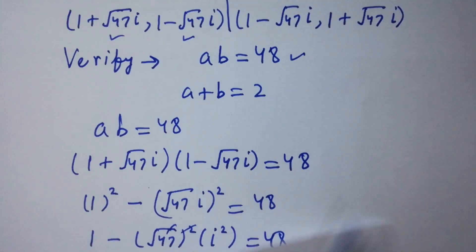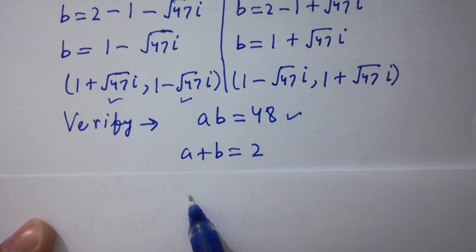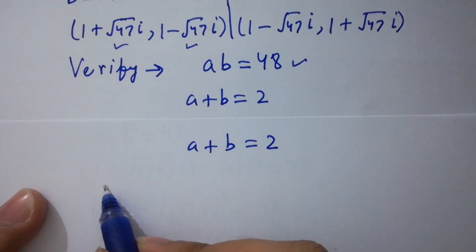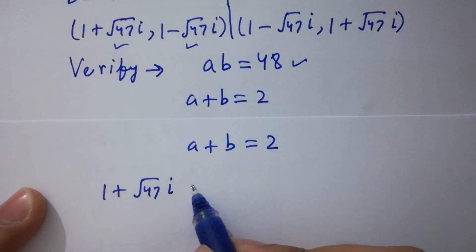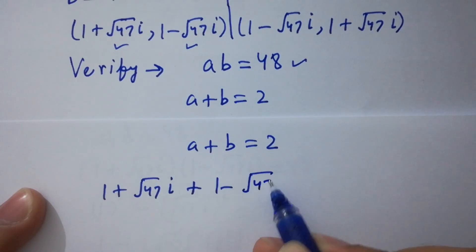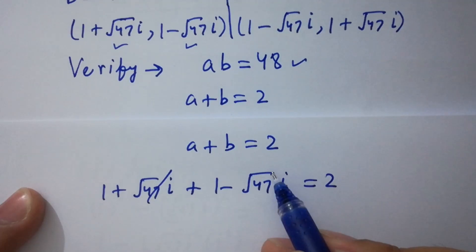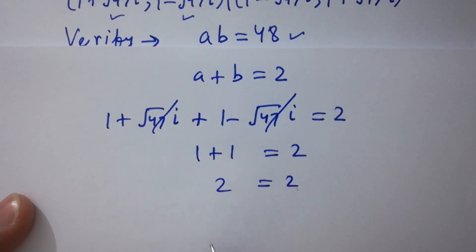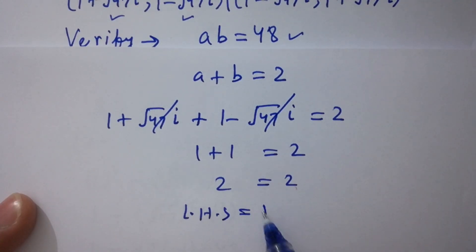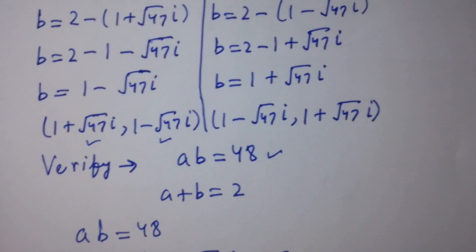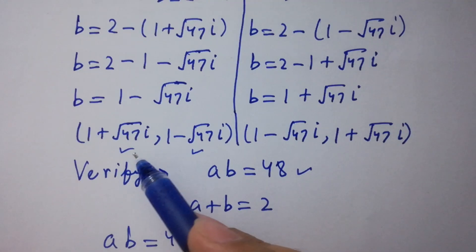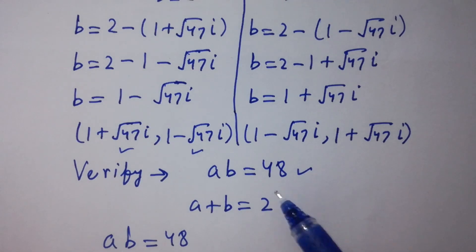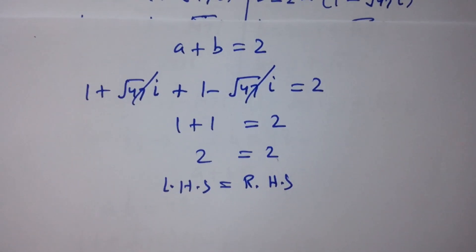If we verify a plus b equal to 2: put the values of a and b, we have (1 plus square root of 47 i) plus (1 minus square root of 47 i) equal to 2. The square root of 47 i terms cancel, giving 1 plus 1 equal to 2, so 2 equal to 2. Left hand side equals right hand side, which shows that the values a equal to 1 plus square root of 47 i and b equal to 1 minus square root of 47 i satisfy both equations ab equal to 48 and a plus b equal to 2. Thanks for watching this video.